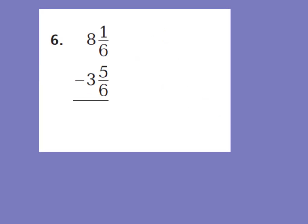Let's skip down to number 6 — we are only doing the even problems today. Number 6 says 8 and 1 sixth minus 3 and 5 sixths. I can see that I cannot take away 5 sixths from 1 sixth, so I need to regroup. I take away a whole from my 8 wholes, leaving 7 wholes, and give that whole to my 1 sixth. One whole equals 6 sixths, so now I have 7 and 7 sixths minus 3 and 5 sixths.